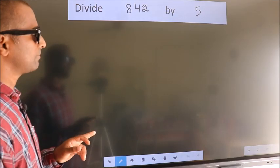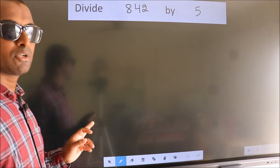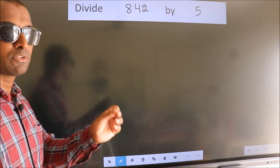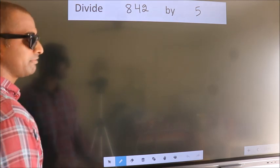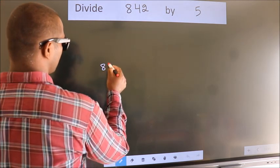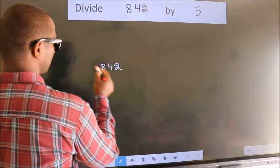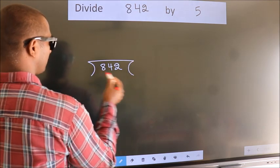Divide 842 by 5. To do this division, we should frame it in this way: 842 here, 5 here.